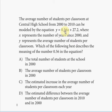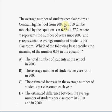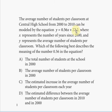So 0.56 is the slope, but let's understand what the equation is actually telling us. Y represents the average number of students per classroom, and x represents the number of years since 2000. If you set x equal to 0, you get the initial number of students per classroom — that would be in the year 2000. So in 2000, the average number of students per classroom is 27.2.